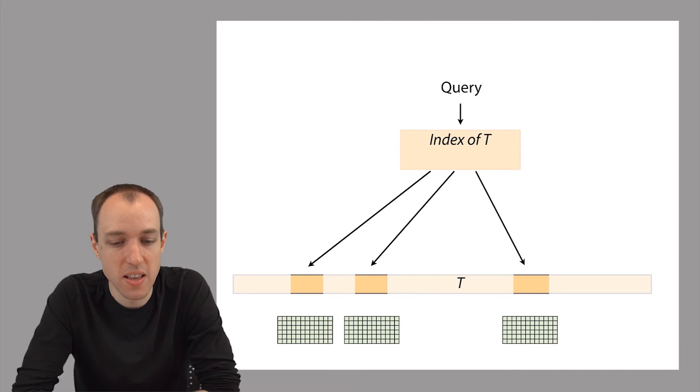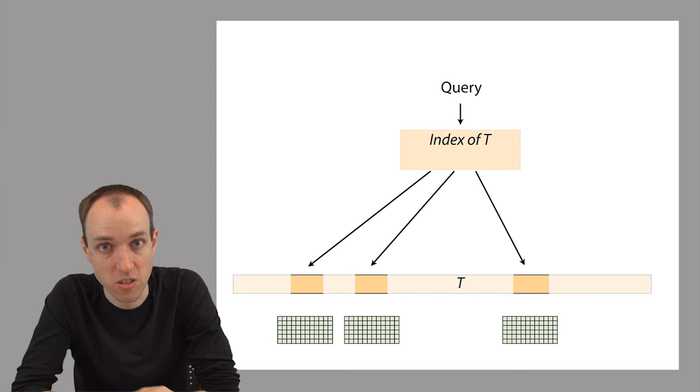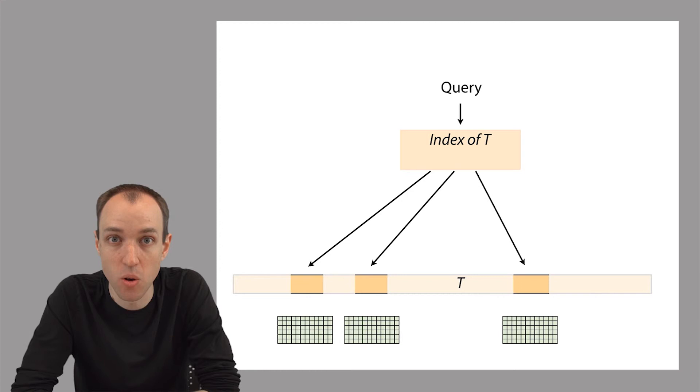That's why we need an index — to rapidly home in on just those portions of the reference genome where we really need to do dynamic programming or a verification step. And why do we need dynamic programming? Basically because indexes don't deal very well with mismatches and gaps. Indexes are really good at finding exact matches, so after getting index hits, we need another algorithm to perform verification and determine whether the pattern as a whole has an approximate match near that index hit.